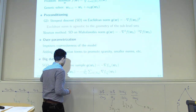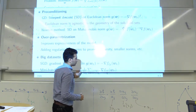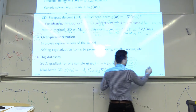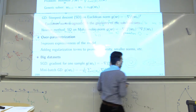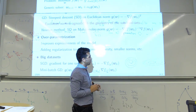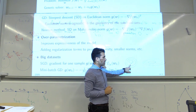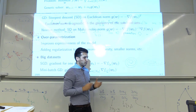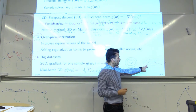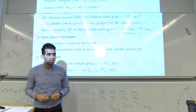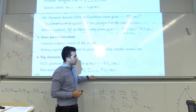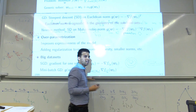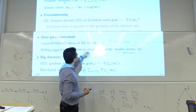If the optimization landscape is nicely shaped, gradient descent works well. But for large-scale problems with many parameters, the landscape can be very ill-conditioned in some coordinates. In that case, you need preconditioning — essentially reshaping the landscape and then running gradient descent on that preconditioned landscape.